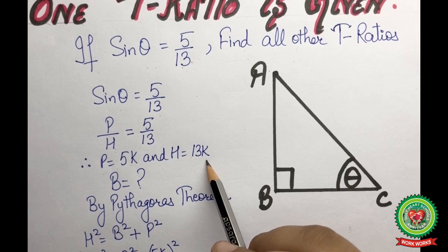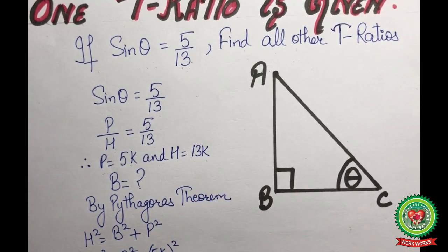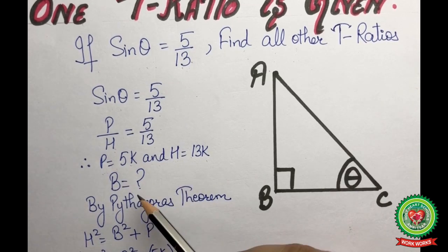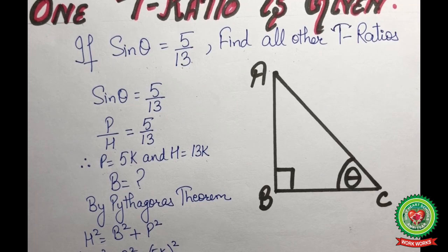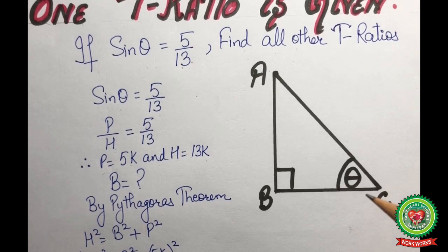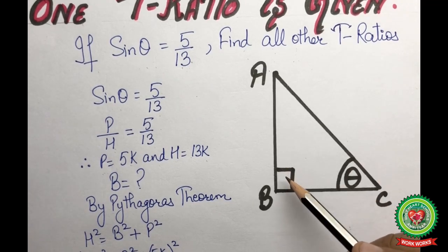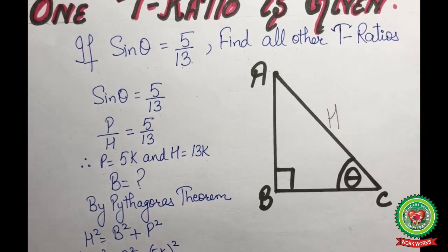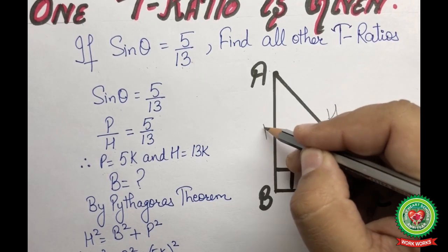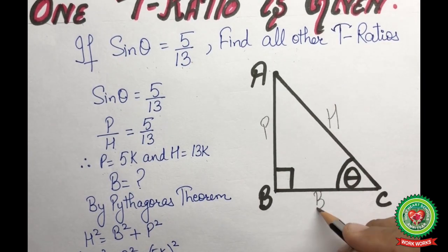To find the trig ratios we require all three sides of a right angle triangle. We have two sides, so we find the third side using Pythagoras theorem. First, we draw a right angle triangle ABC with the right angle at B and the reference angle at vertex C. The hypotenuse AC is opposite the 90-degree angle, AB is the perpendicular opposite the reference angle, and BC is the base.